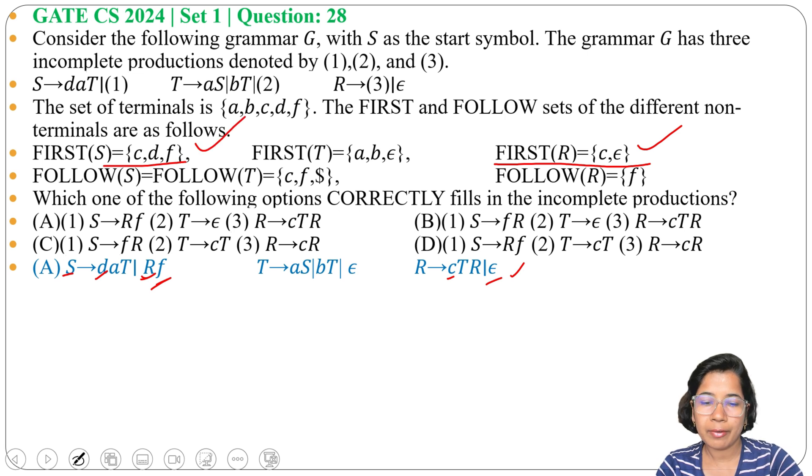First of T is C, D, F. Then first of T are A, B, and Epsilon. Yes. So all first are same.